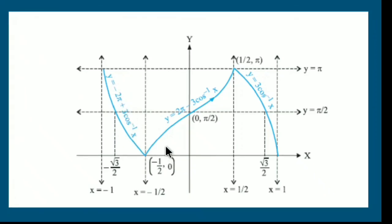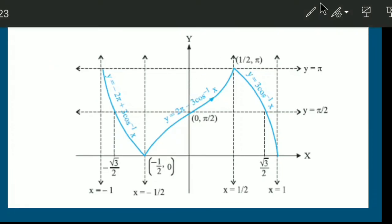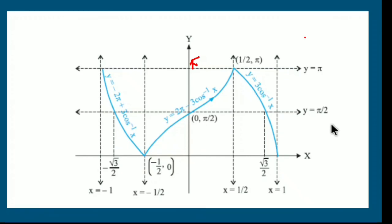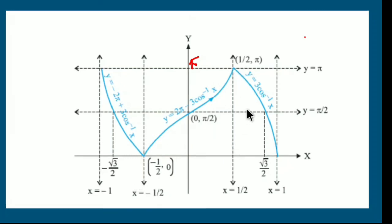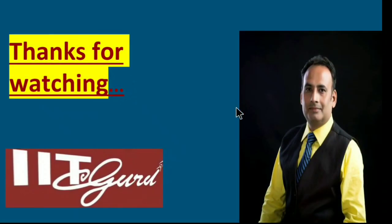The points x = ±√3/2 are where the graph crosses the x-axis. The graph is spanned over x ∈ [−1, 1] and y ∈ [0, π]. There are sharp corners at x = ±1/2, where the function is not differentiable. So if someone asks to differentiate y = cos⁻¹(4x³−3x) at x = 1/2 or x = −1/2, the result is undefined (not differentiable). Thanks for watching.